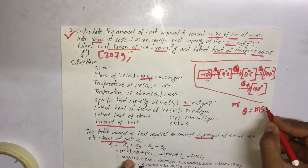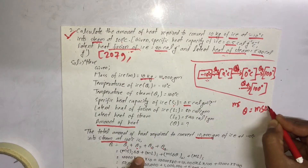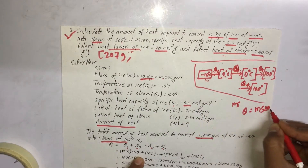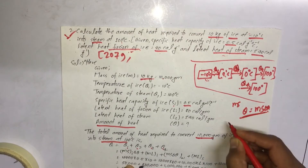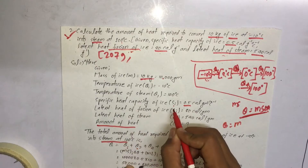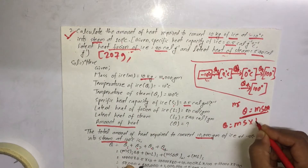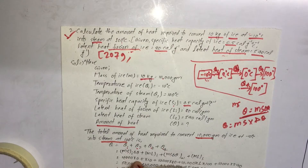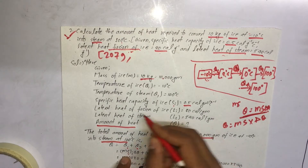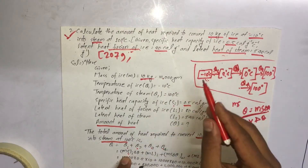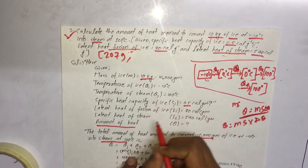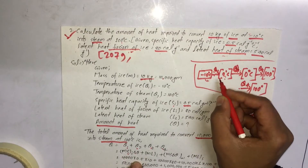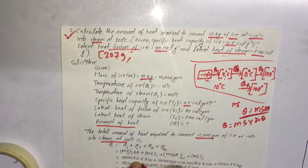For Q1, the specific heat capacity of ice is used with the change in temperature. Delta T is zero minus (minus 10), which gives 10 degrees Celsius change. The formula is Q equals mass into specific heat capacity into delta T. Mass is 10 grams, specific heat capacity of ice is 0.5, and the change in temperature is 10 degrees Celsius.